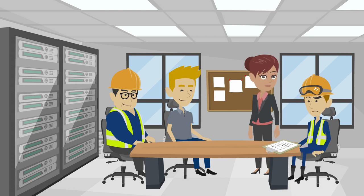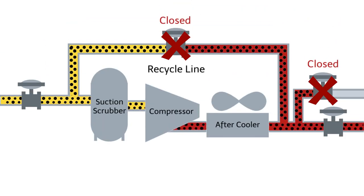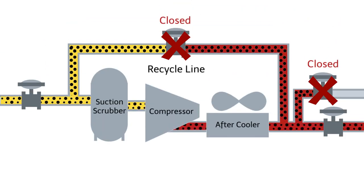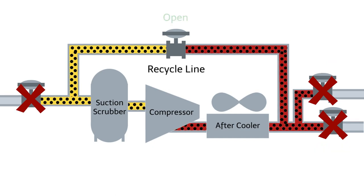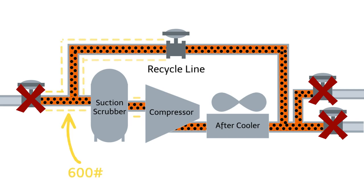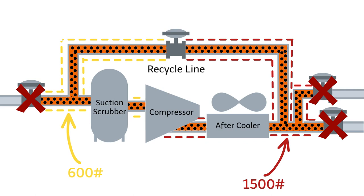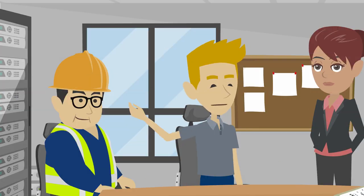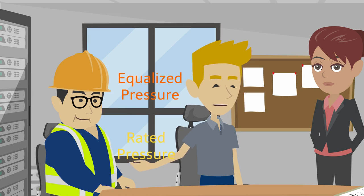How does that occur? There's a flow path that we have not discussed yet — the recycle line around the compressor. When the compressor shut off, the recycle valve opened. This created a path between discharge and inlet and allowed pressure to equalize around the compressor. The inlet has 600-pound piping, while the outlet has 1500-pound piping. The equalized pressure was higher than the rated pressure of the inlet piping.